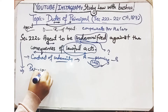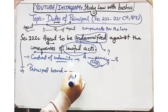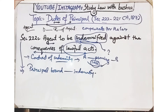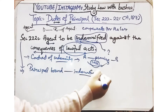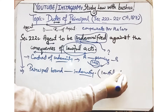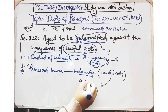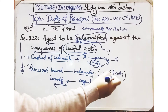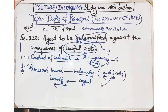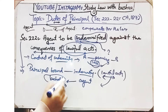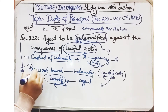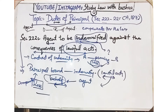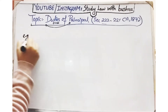Looking at the bare language of Section 222: a principal is bound to indemnify his agent. For what? When the agent is performing any lawful act. The agent is the one working on behalf of the principal. So if, while performing any lawful act on behalf of the principal, the agent suffers any kind of loss, who will compensate that loss? The principal who employed him will compensate that loss.